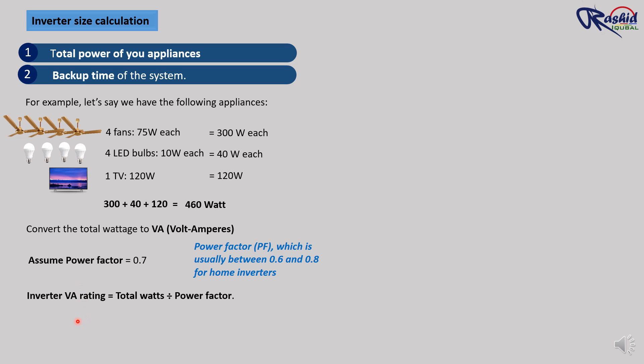The formula to convert watts to VA is: inverter VA rating equals total watts divided by power factor. So in our case, total watts is 460 watts as we calculated, divided by 0.7 power factor. So after dividing this value we get 657 VA.